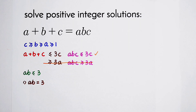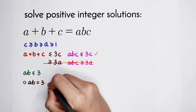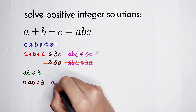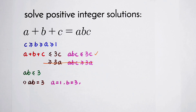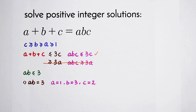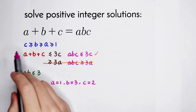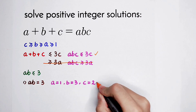Since AB ≤ 3, consider AB = 3. Then 3 can be split as 1 times 3. Since A ≤ B, we get A = 1 and B = 3. Solving for C gives 2C = 4, so C = 2. But wait — C must be greater or equal to B, and here 2 is less than 3. So this case must be deleted.